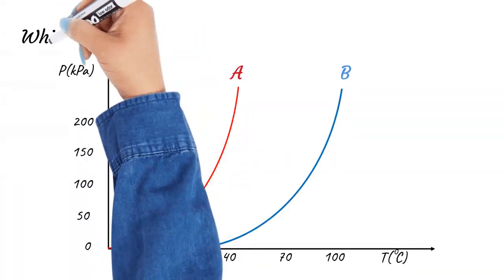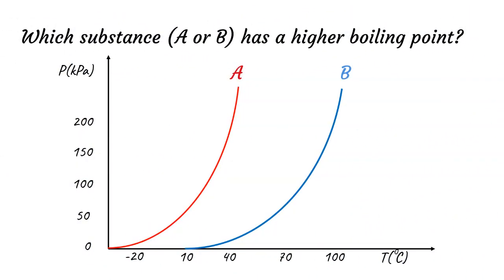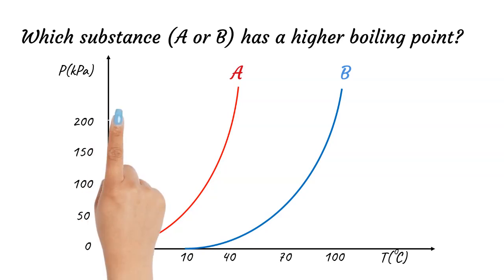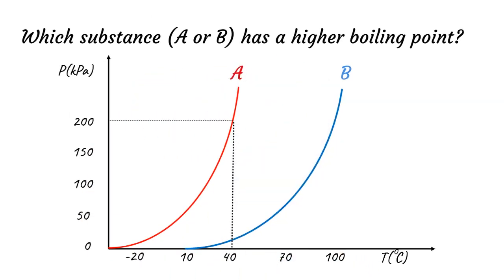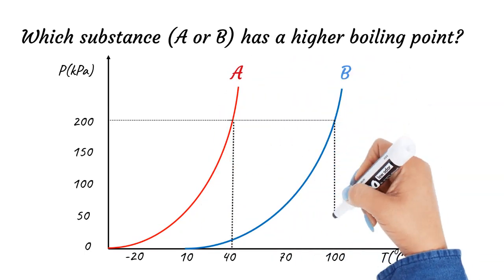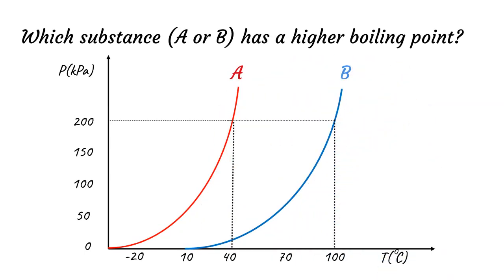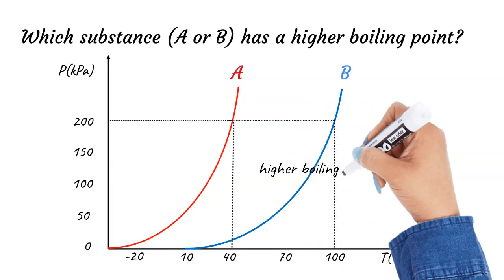Next we will compare the boiling points of substances A and B using the vapor pressure curves. At any given pressure, substance A boils at a lower temperature than substance B. The reason is that at any given temperature, A has a higher vapor pressure than B, meaning A is more volatile than B. Therefore, the vapor pressure of A reaches the external pressure at a lower temperature than B. For instance, at 200 kPa external pressure, substance A boils at 40 degrees Celsius, while B boils at 100 degrees Celsius. Thus, the boiling point of substance B is higher than substance A.